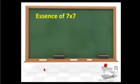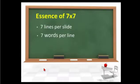So first of all, let's talk about the essence of 7x7. What is it exactly? This is a best practice rule to follow that says on each PowerPoint slide, you should only have seven lines per slide maximum and seven words per line. Very simple. And sub-bullets are the same.